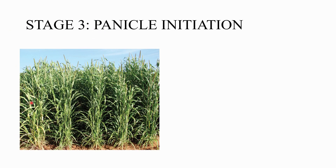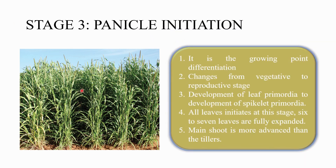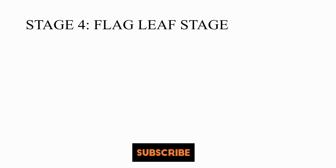The third stage is the panicle initiation stage, where the vegetative stage changes to the reproductive stage. Notable changes include growing point differentiation, leaf primordia development, and spikelet development primordia. Six to seven leaves are broadly fully expanded, and the main shoot is more advanced than the tillers. Maximum growth of the plant can be observed here.